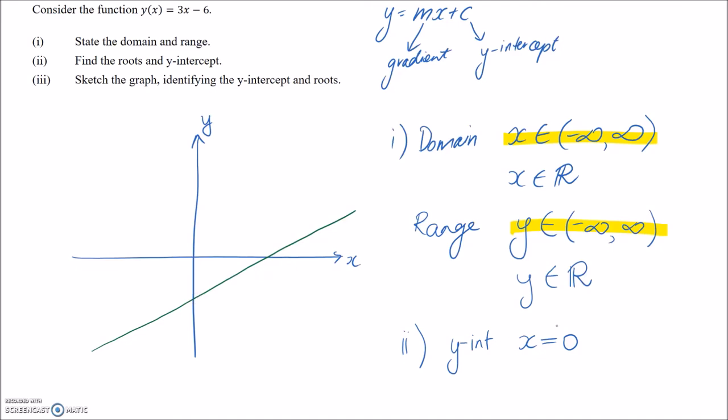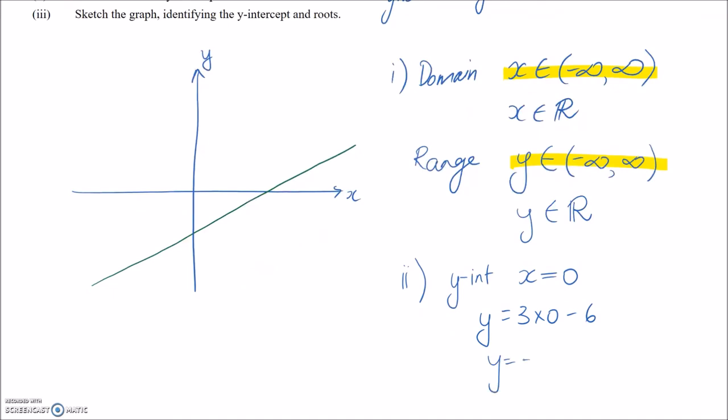So if you do that, you should get the same thing. So if I sub x equals zero into this, I'm going to get y equals three times zero minus six, or y equals minus six, which was my y intercept.